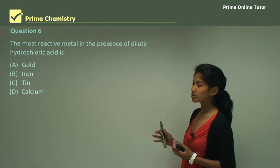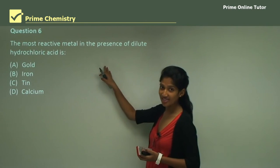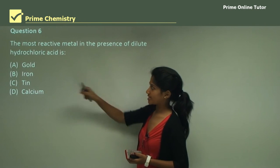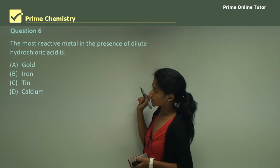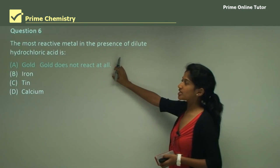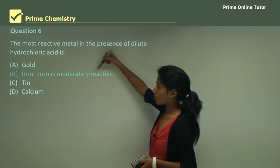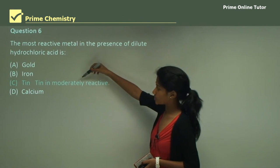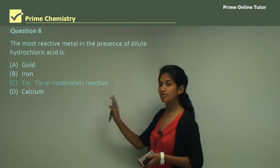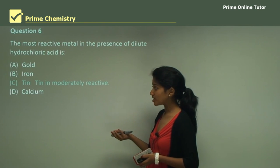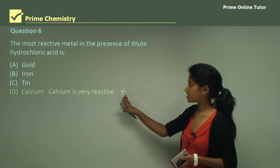Question 6 is a multiple choice question. The most reactive metal in the presence of dilute hydrochloric acid is which one of these? We have gold, iron, tin and calcium. Gold doesn't react at all so you can't call it a reactive metal. Then we have iron which is moderately reactive and tin which is also moderately reactive. Calcium is in the second group. Second group metals are quite reactive. So indeed calcium is very reactive, making calcium the correct answer. Option D is our correct answer.